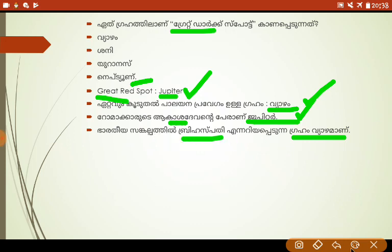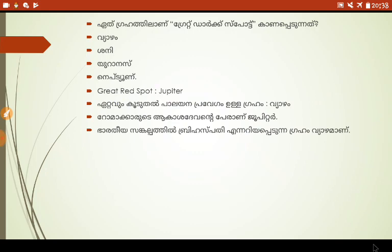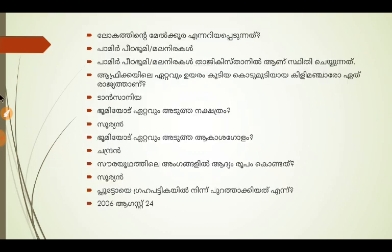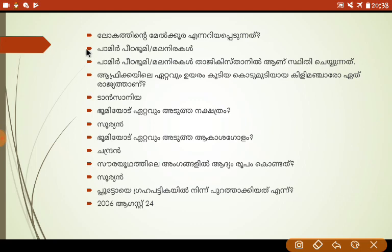We will talk more about the Great Dark Spot for Neptune. What is the name of this plateau? It's called the Pamir Plateau. So Pamir Plateau is in Tajikistan.